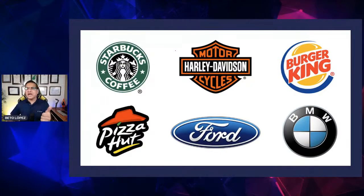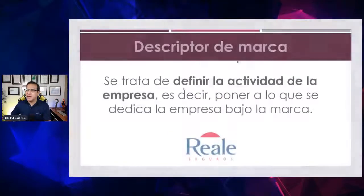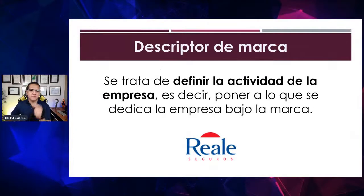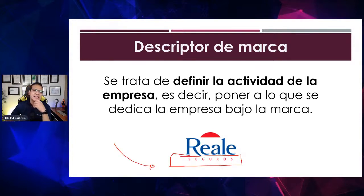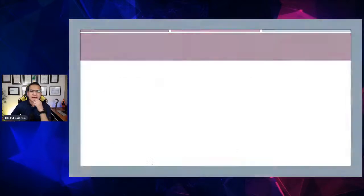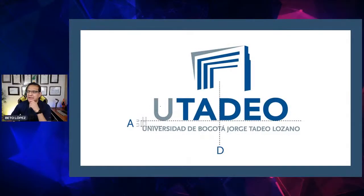Entonces hay imagotipos, isotipos, isologos y logotipos. Son cuatro opciones que tienes que saber. Luego viene el descriptor de marca: cuando le colocas a tu marca, por ejemplo, 'seguros'. El descriptor de marca lo que hace es definir para qué sirve una marca, el contexto de la marca y cuál es su aplicación.